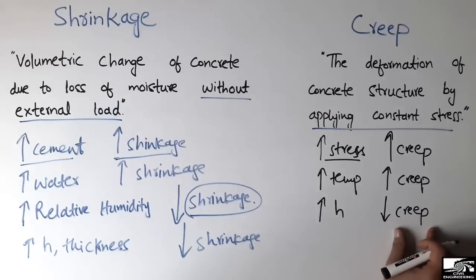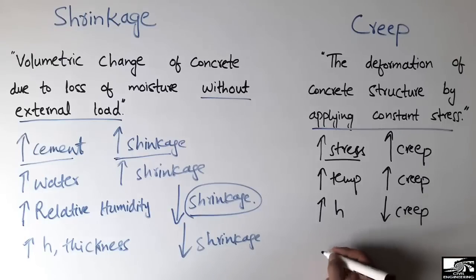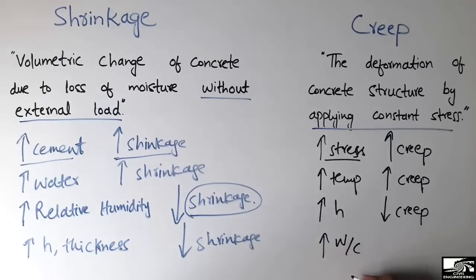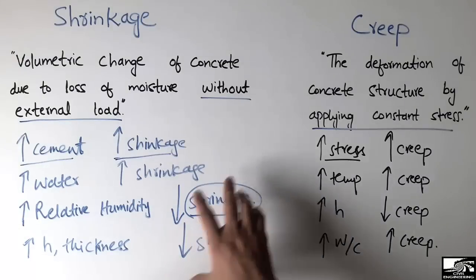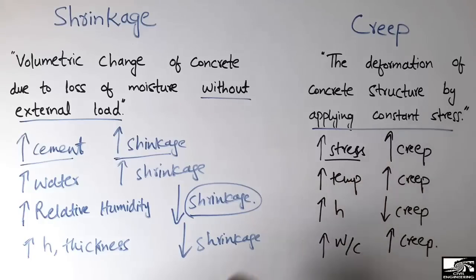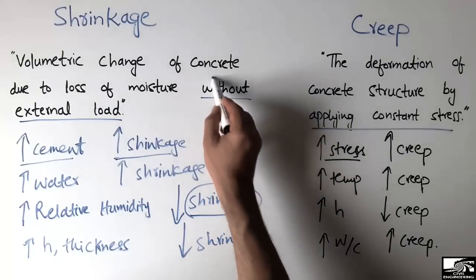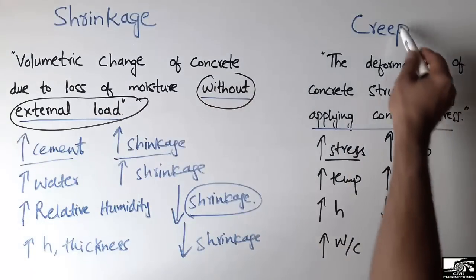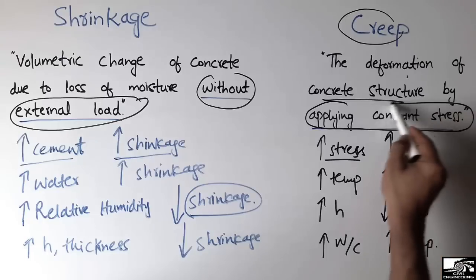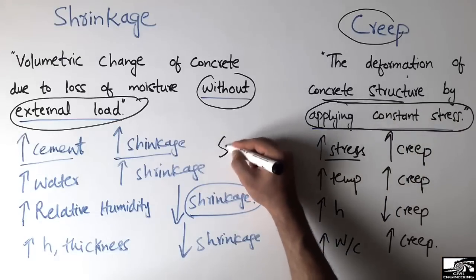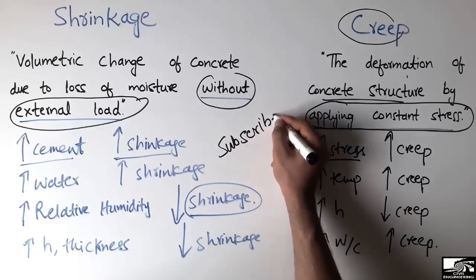The last factor for creep is the water-to-cement ratio. If we increase the water-to-cement ratio, creep increases in the structural member. These are the major factors which dominantly affect these two deformation phenomena. The main difference is that shrinkage involves no external load, while creep involves deformation under a constant applied stress. Hope you guys understand — don't forget to subscribe for daily civil engineering videos.